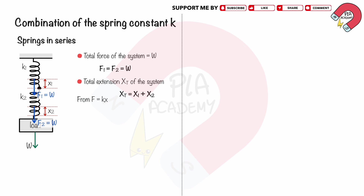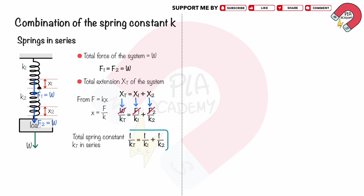From Hooke's law F equals KX, we rearrange the equation to express extension as X equals F over K. Substituting XT equals W over KT, X1 equals F1 over K1, and X2 equals F2 over K2, where KT is the total spring constant. We can cancel out W, F1 and F2 because they are equal. So, the total spring constant KT in series is: 1 over KT equals 1 over K1 plus 1 over K2.